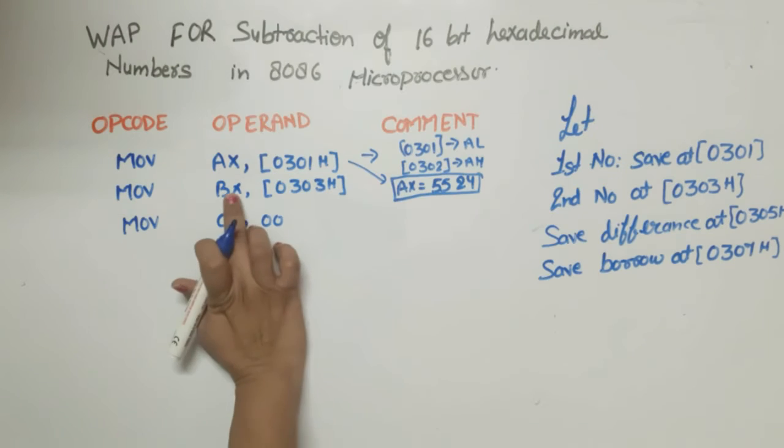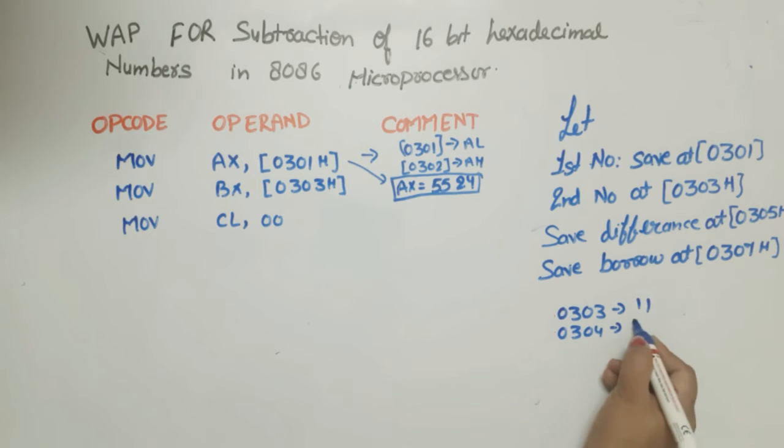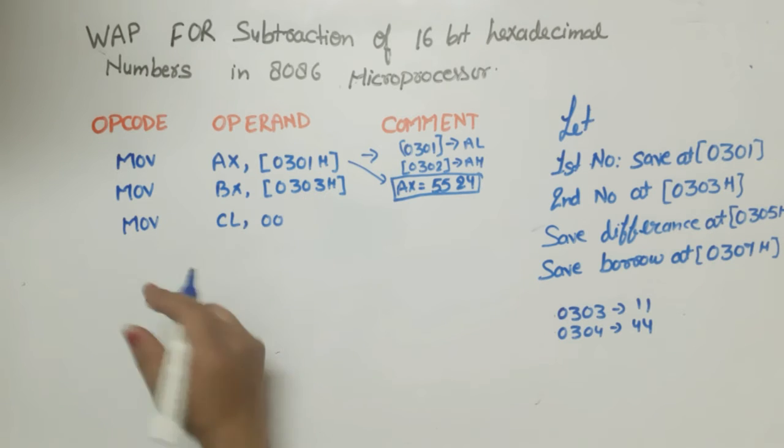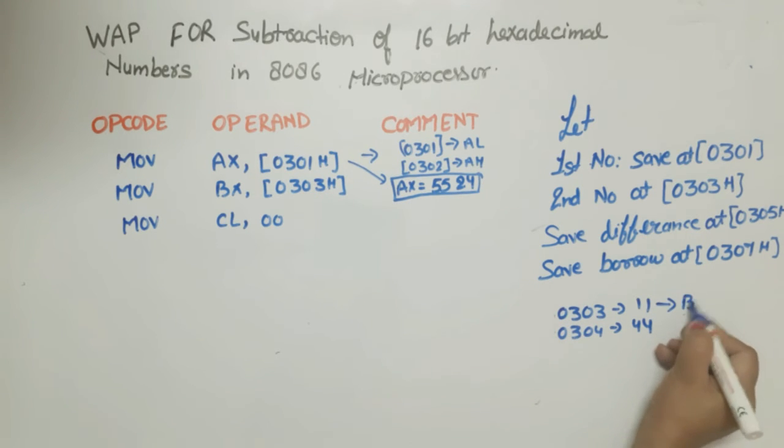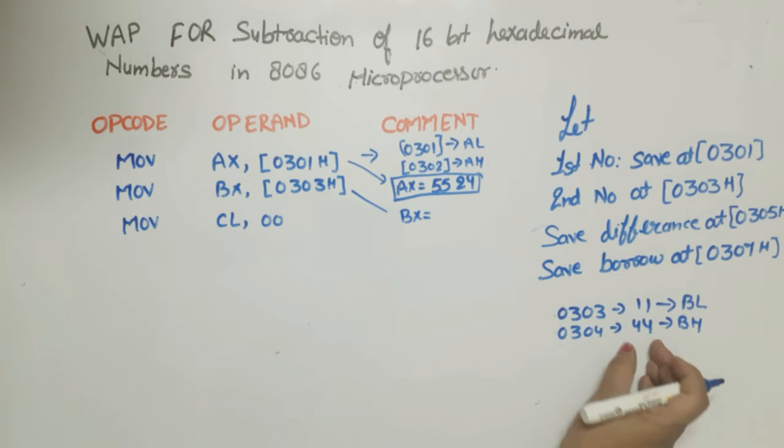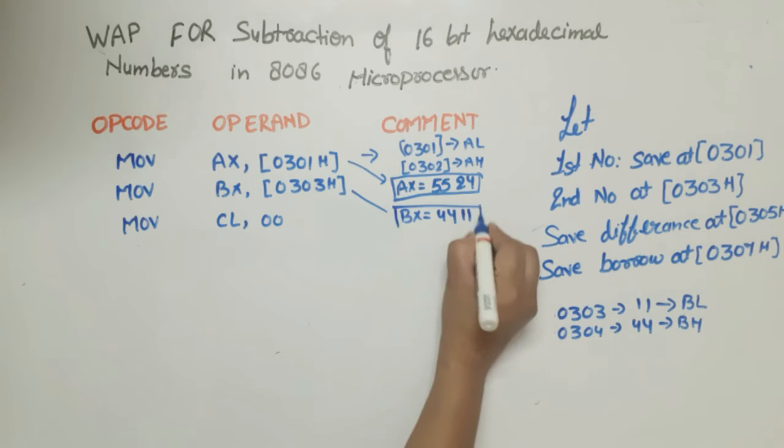Explanation of this: assume that 0303 has number 11 and 0304 has number 44. If our BX 0303 executes then this data will move in BL and this data will move in BH, means that after this BX value will be first BH content means 44 then BL content means 11. So this is the value, clear.